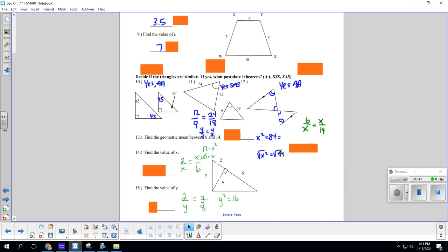Simplifying radicals, you find the perfect square that lives inside of 84. And I know that 4 goes into 84. So we're going to take the square root of 4 and get 2. And then that leaves us with 21 still left inside because it is not perfect. So the answer is 2 root 21.